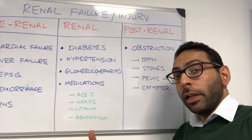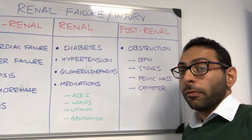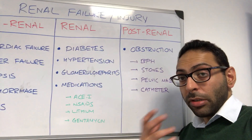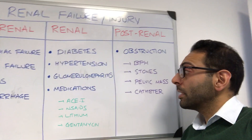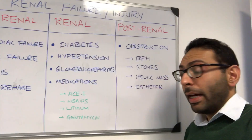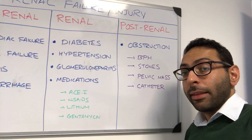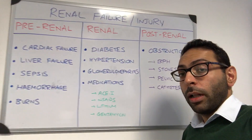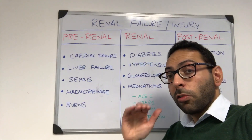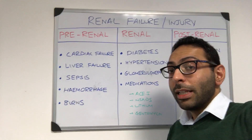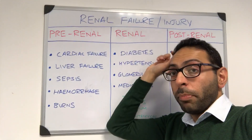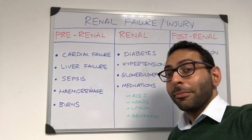Post-renal causes involve outflow obstruction of urine due to things like prostate problems — BPH or prostate cancer — renal stones, pelvic masses, or blocked urinary catheters. Overall, split the presentation into acute or chronic first, then think in terms of pre-renal, renal, or post-renal causes.